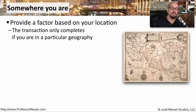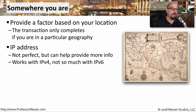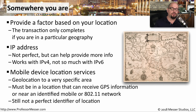Another useful authentication factor is the geographical location of where someone happens to be — this is somewhere you are. One way to determine location is to look at someone's IPv4 address, which isn't a perfect representation of geography but may indicate what country someone is in. IPv6's large address space doesn't give you the same granularity as IPv4. Many devices carry a GPS that can provide very detailed location information, or you can triangulate against ground-based systems. This triangulation may not give an exact location, but it can be close enough for authentication purposes.